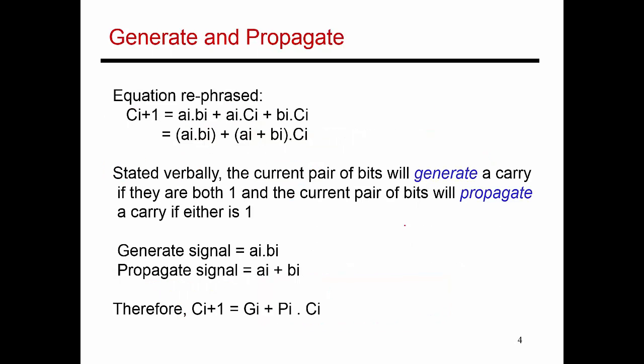The way I address this is by introducing the abstraction of a generate signal and a propagate signal. Looking at the same carry equation — the carry coming out of stage I is a function of inputs A-I and B-I, and the carry-in that came into that stage. I reorganize this term to produce an equation which says that if A-I and B-I are both ones, then there is a sufficiently large quantity being added that I am going to generate a carry. So if A-I and B-I are both ones, I generate a carry myself — I don't need to look at the carry signal coming into me. This is referred to as the generate signal: A-I dot B-I.